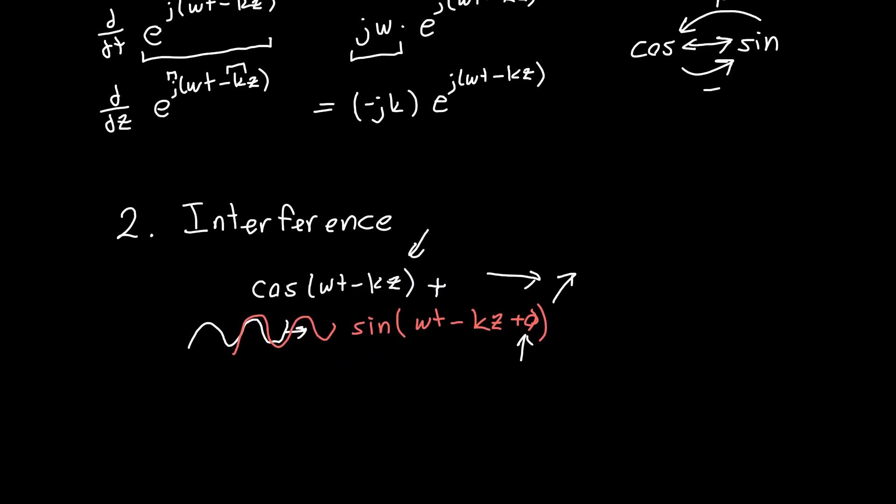And this happens literally all the time. We add cosines and sines. Or we add cosines and cosines. Anytime you want to calculate the interference of two waves, which is literally every electromagnetics application ever, you have to do this.